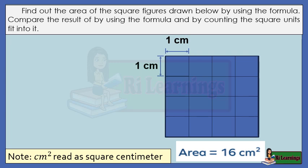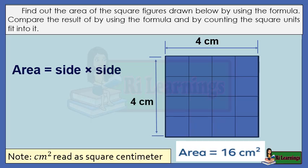Find out the area of the next square figure using the formula, and compare the result with counting the square units. Since the side of the square has 4 units of 1 centimeter squares, the length of the side of the square will be equal to 4 centimeters. Using the formula: area equals side times side — 4 centimeters times 4 centimeters equals 16 square centimeters.